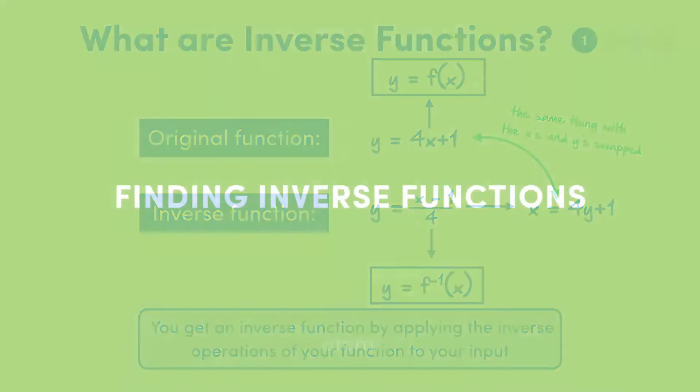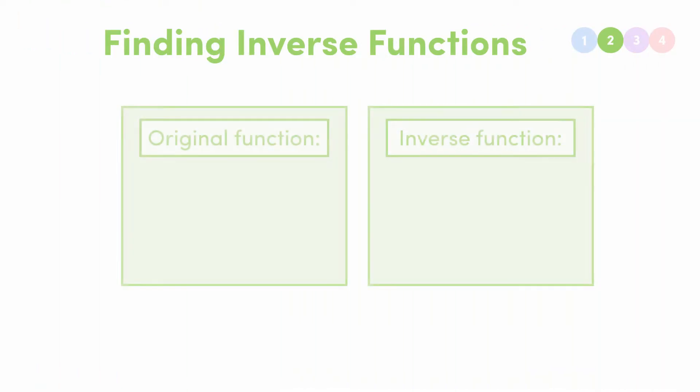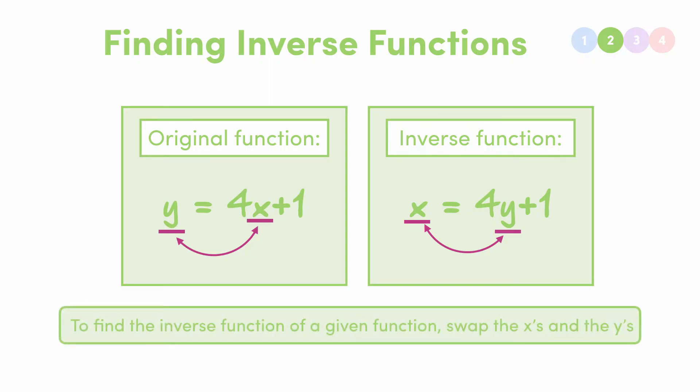So let's look at how we can quickly find inverse functions. In our example before, we found that our original function and our inverse function were exactly the same but with the x and the y swapped. That's our key. To find the inverse function of a given function, you need to swap the x's and the y's in the relation.